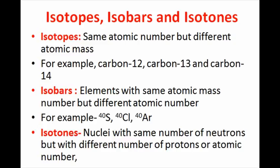Isobars are atoms, or nuclides, of different chemical elements that have the same number of nucleons. Correspondingly, isobars differ in atomic number, or number of protons, but have the same mass number. An example of a series of isobars would be 40S, 40Cl, and 40Ar. The nuclei of these nuclides all contain 40 nucleons; however, they contain varying numbers of protons and neutrons.